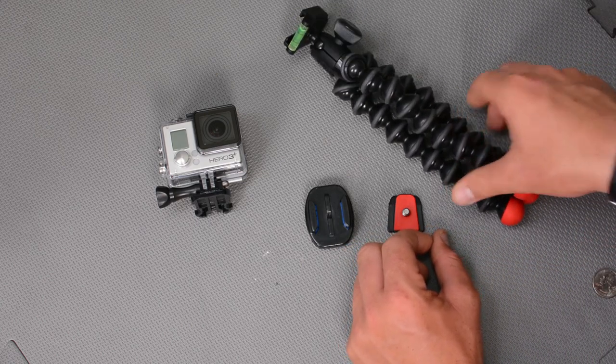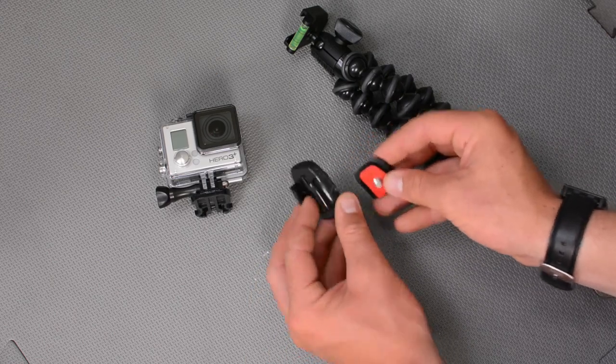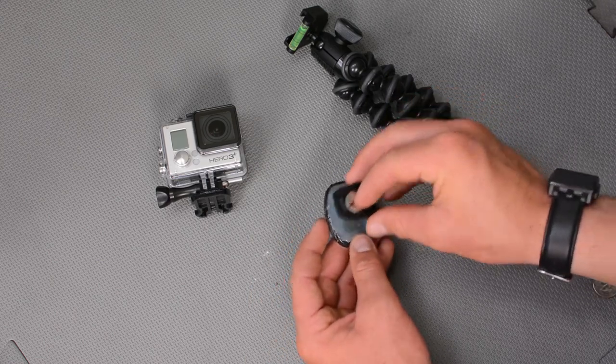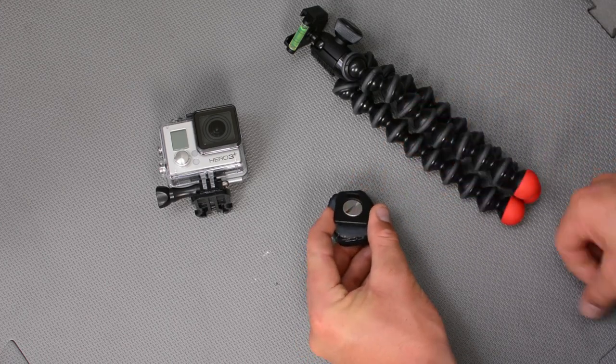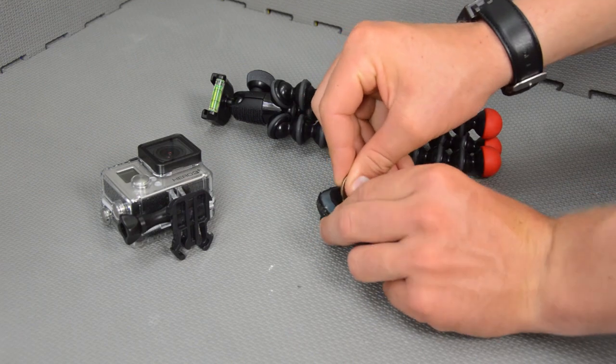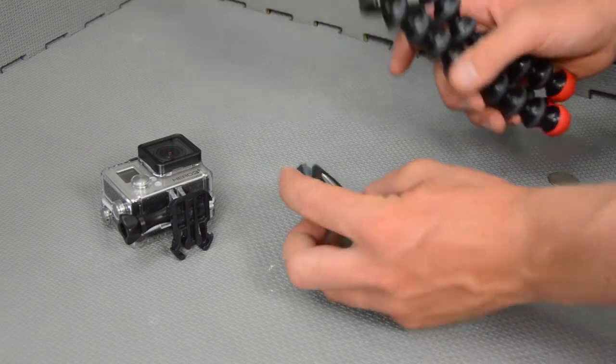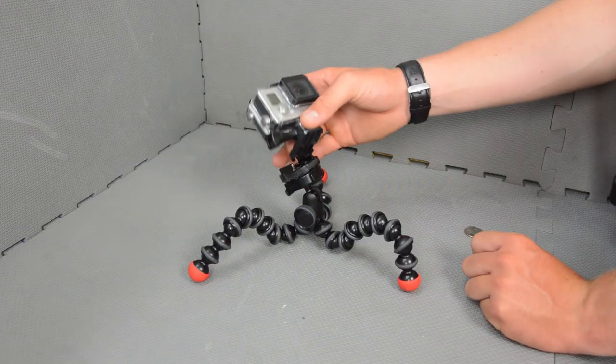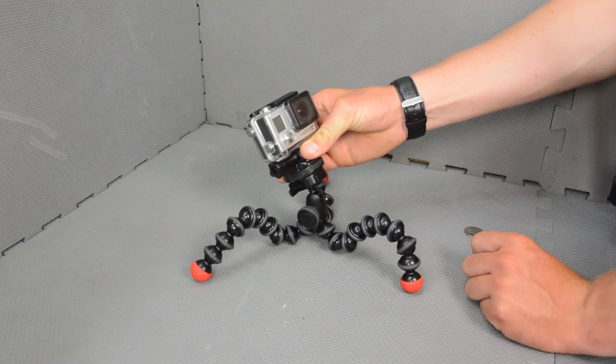We're going to use the Joby Action tripod here. We're going to flip our new custom GoPro tripod mount over, put down the base plate, screw it in just like that, then clip it onto our Joby tripod. With that complete, we can go ahead and just slide our camera into the base plate.